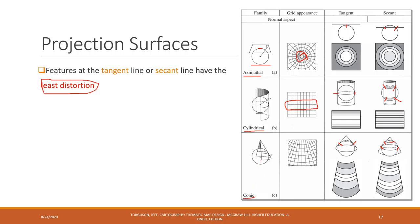The last one is called the conic surface, where places in the middle latitudes will have the least distortions. The reason we have this one is because most countries are located in middle latitude regions, like the United States and other countries. So although there are distortions, if you choose the right surface, then you will reduce the distortion. You have to choose the right surface that fits best with your study area.